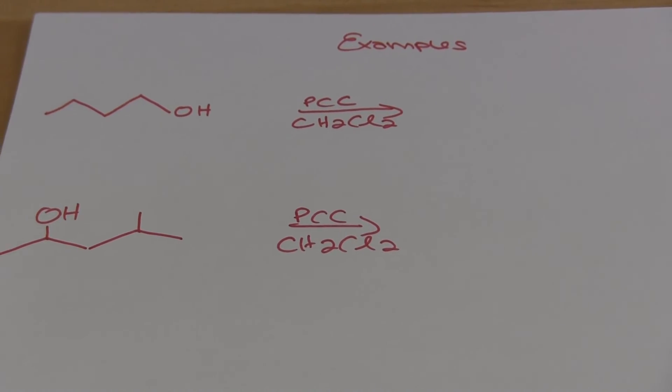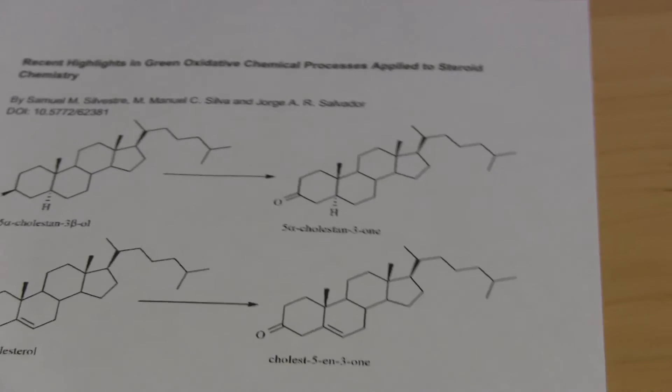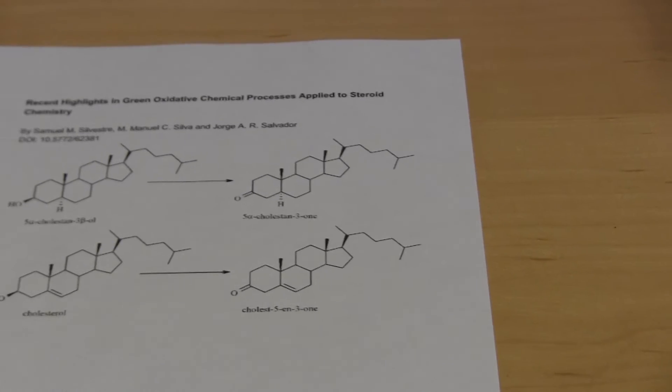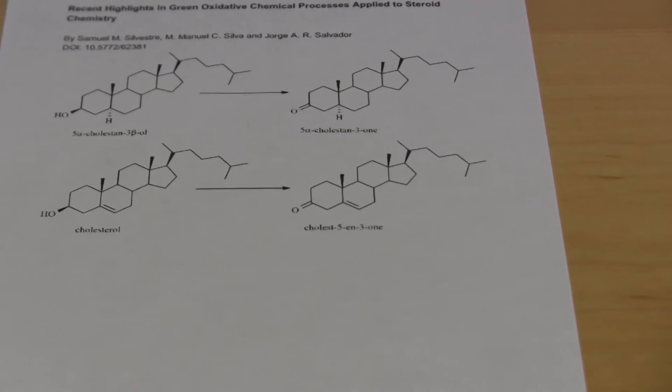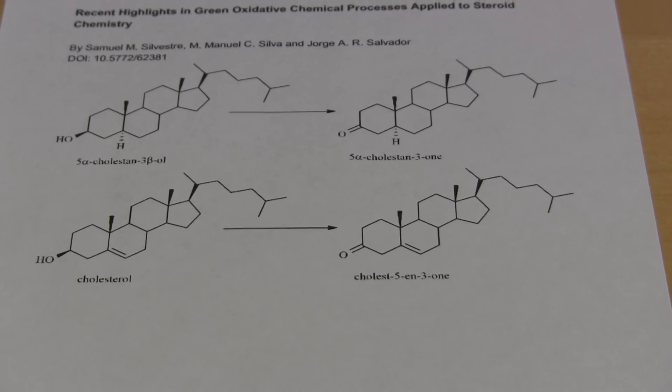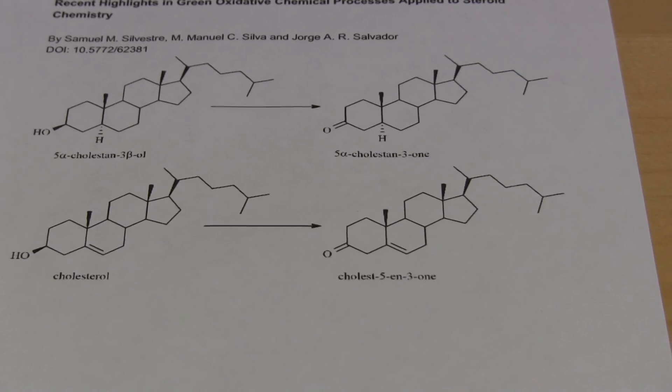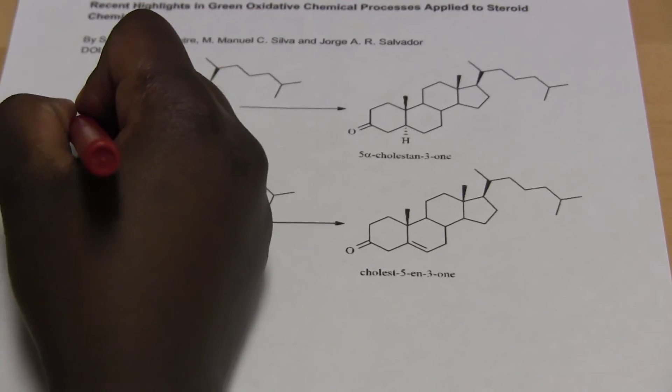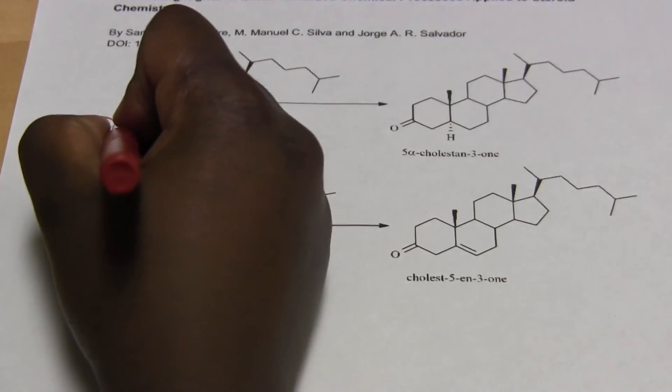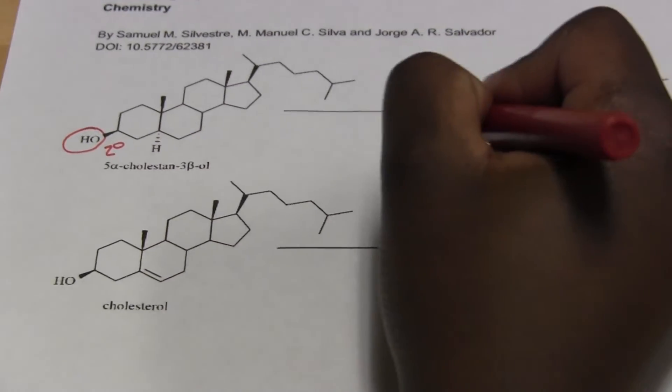And I'm just going to leave you with one last thing, and this is cholesterol. It's in our membranes and it helps keep the fluidity, and it can also be synthesized in the lab as shown in this picture. And over here is your alcohol. This happens to be a secondary alcohol and it gets oxidized into a ketone.